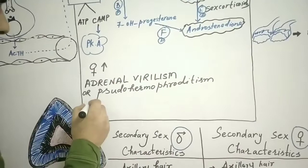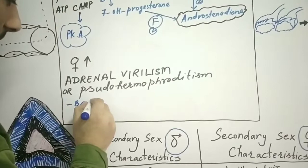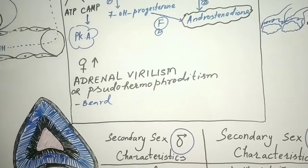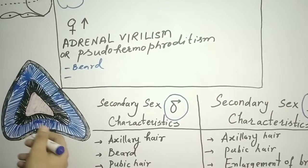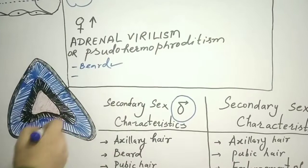In adrenal virilism, females develop a beard, deepening of voice, increase in libido — sexual desire — and facial hair, as well as other male secondary sexual characteristics.